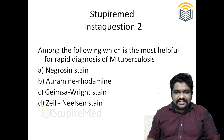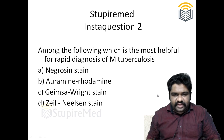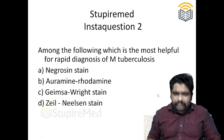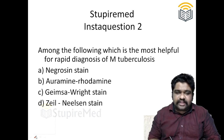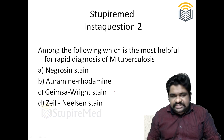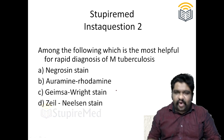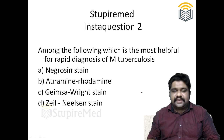Hi people, this is Tupai Med Insta question 2. Among the following, which is the most helpful for rapid diagnosis of M. tuberculosis? Is it nigrosin stain, auramine rhodamine stain, Giemsa stain, or the Ziehl-Neelsen technique?